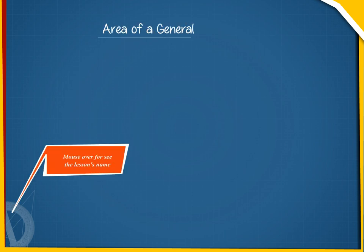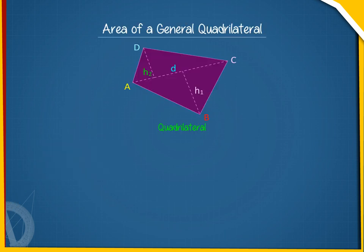Area of a general quadrilateral. A general quadrilateral can be split into two triangles by drawing one of its diagonals. This triangulation helps us to find a formula for any general quadrilateral.